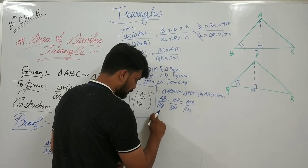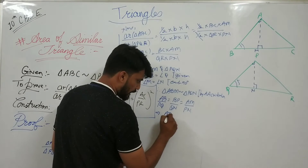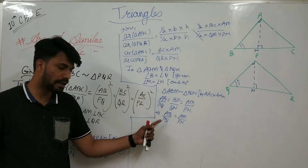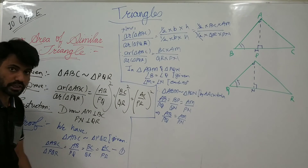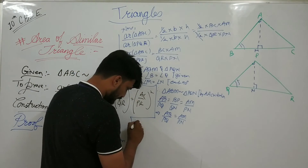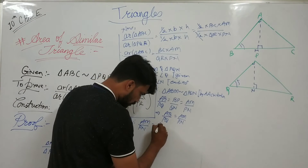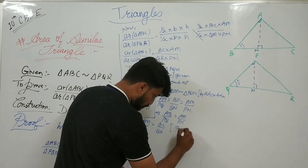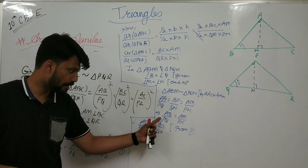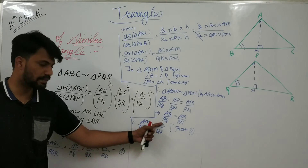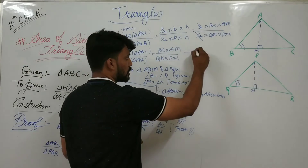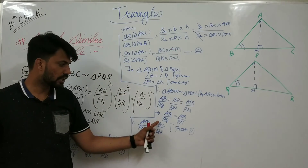From this statement, AB/PQ = AM/PN, and from Equation 1, AB/PQ = BC/QR. Therefore AM/PN = BC/QR. Mark this as Equation 2. Now, substituting AM/PN with BC/QR in our area ratio expression, area of triangle ABC upon area of triangle PQR equals BC/QR × BC/QR. Mark the area ratio result as Equation 3.